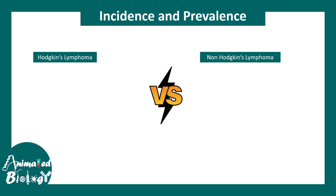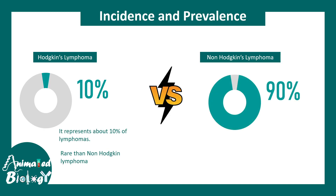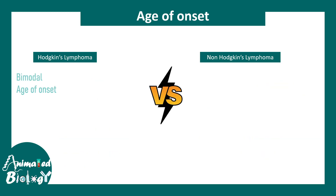Then incidence and prevalence. Hodgkin's lymphoma is rare, whereas non-Hodgkin's lymphoma is more common, accounting for 90% of the cases. Whereas Hodgkin's lymphoma only accounts for 10%.